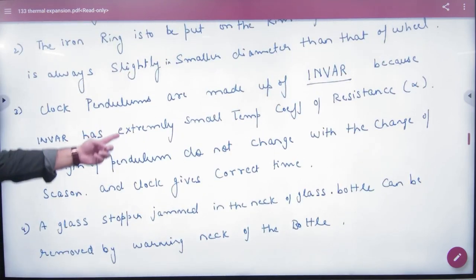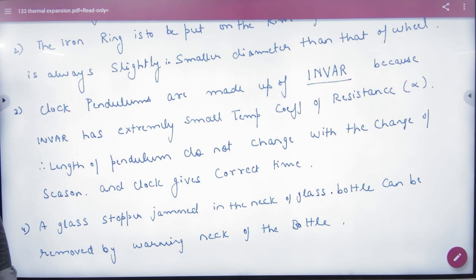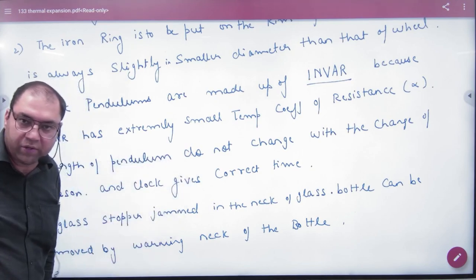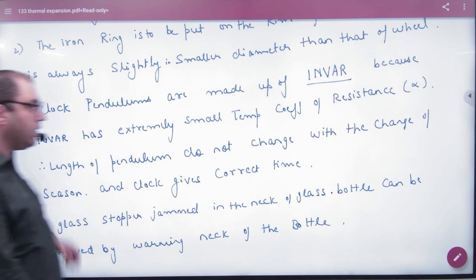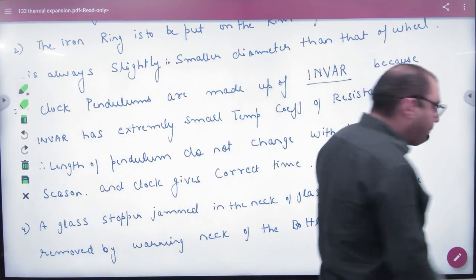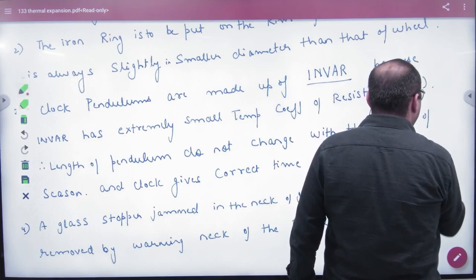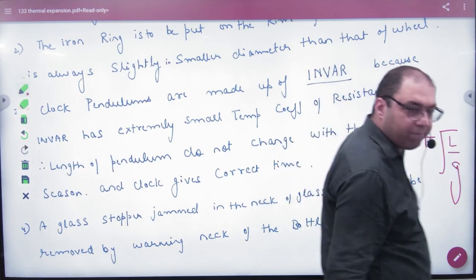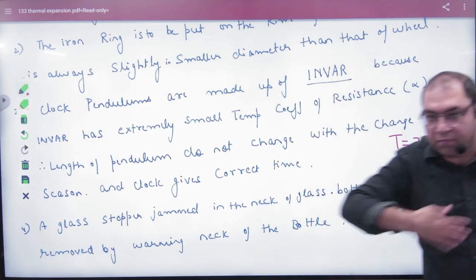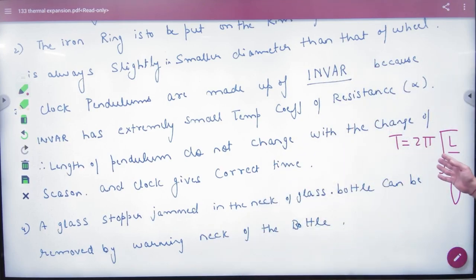The most important application is that clock pendulums are made of Invar. Pendulum clocks use Invar because the pendulum's time period depends on a formula. The time period follows this formula for a simple pendulum, which we've discussed before.